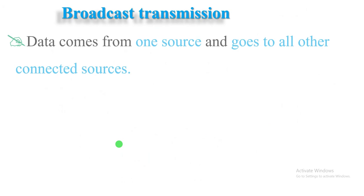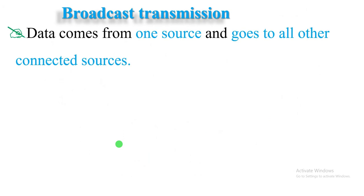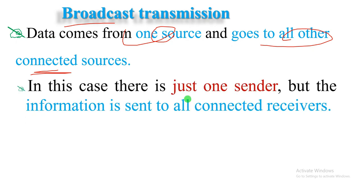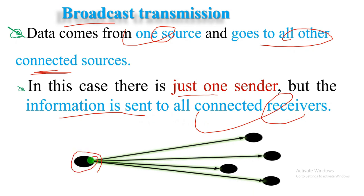This is the Broadcasting Transmission. Broadcasting: data comes from one source and goes to all other connected sources. In multicasting, the data goes to intended receivers — one-to-many or many-to-many. But in broadcasting, there is just one sender, and the information is sent to all connected receivers. As you have seen, there is one sender and the data is forwarded to all receivers.